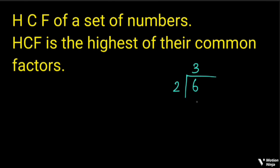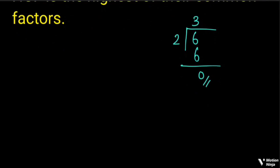If you have a set of numbers, the number is 6. Now, the divisor is 2. The divisor is 3. If you have a divisor, the divisor is 2. If we divide by 2, complete division is possible, with remainder 0. So, 2 is a factor.